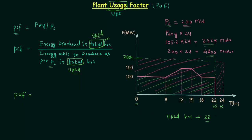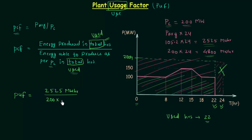Plant usage factor PUF is equal to 2525 MWh — the total area also equal to the area for used hours, calculated in the earlier lecture. Now we find energy able to produce as per PC in used hours: 200 MW multiplied with 22 hours, which gives 4400 MWh. So PUF equals 2525 divided by 4400, which is equal to 0.5738. Therefore, percentage plant usage factor is equal to 57.38%.